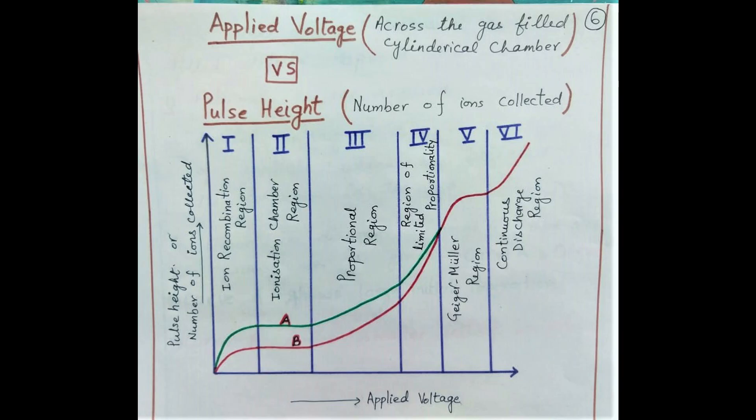In the voltage range when M remains constant, that region is called the proportionality region, and the detector which works in this voltage range is called a proportional counter. In this region the pulse height is directly proportional to the energy loss of the incident ionizing particle, so it can be used to distinguish between particles, their energies, and their initial ionizing powers.